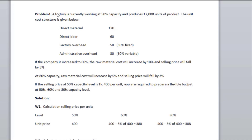First of all, a factory is currently working at 50% capacity and produces 12,000 units of product. The unit cost structure is given below.